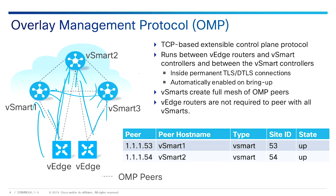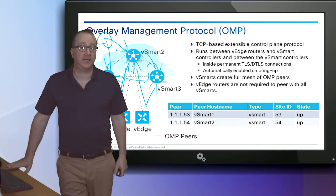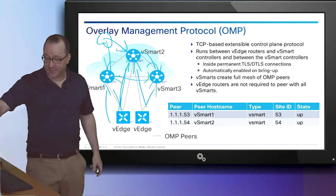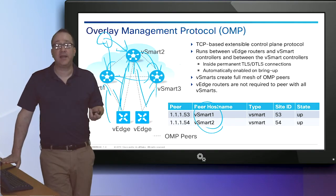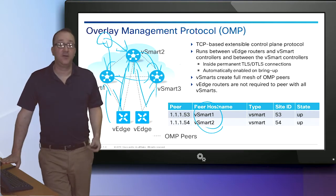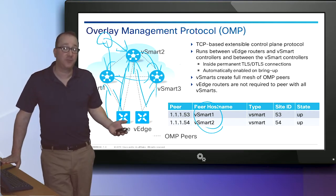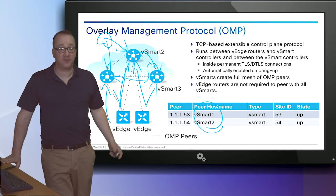OMP also allows the assimilation and dissemination of centrally defined data and application-aware routing policies. We can configure a policy on V-Manage, distribute it to the V-Smarts, and then the V-Smarts will distribute them down to the V-Edges. It allows a high degree of scalability by dramatically lowering control plane complexity, because each device is actually only connected to two V-Smarts — even if we have 10 V-Smarts, we'll still only make a connection to one and a backup.